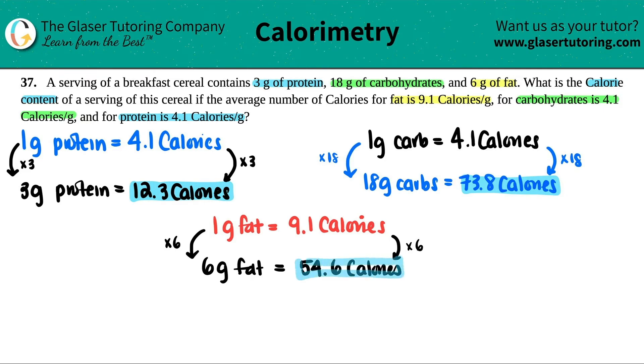All right. So now we have all of the individual amount of calories for the protein, carbs, and the fat. We want to know what the calorie content is of the total. So that's total calories.